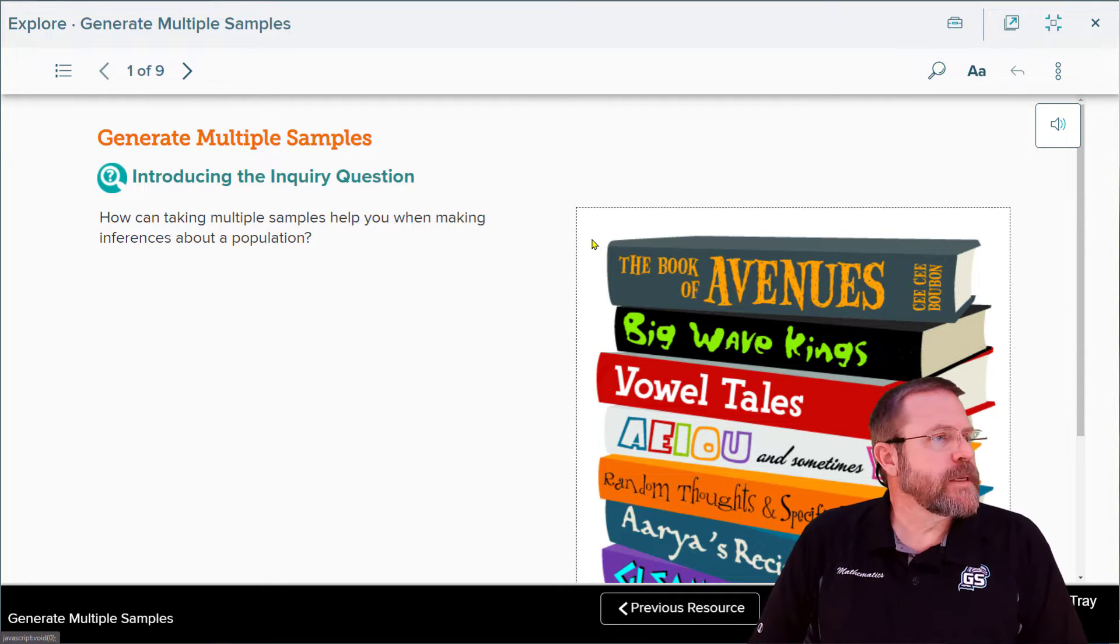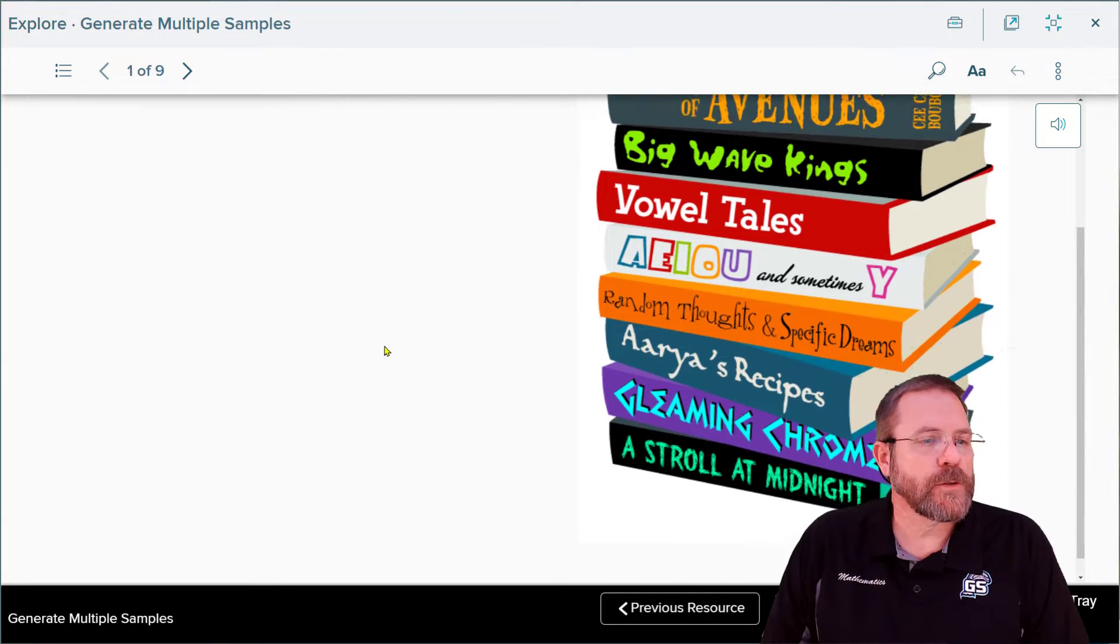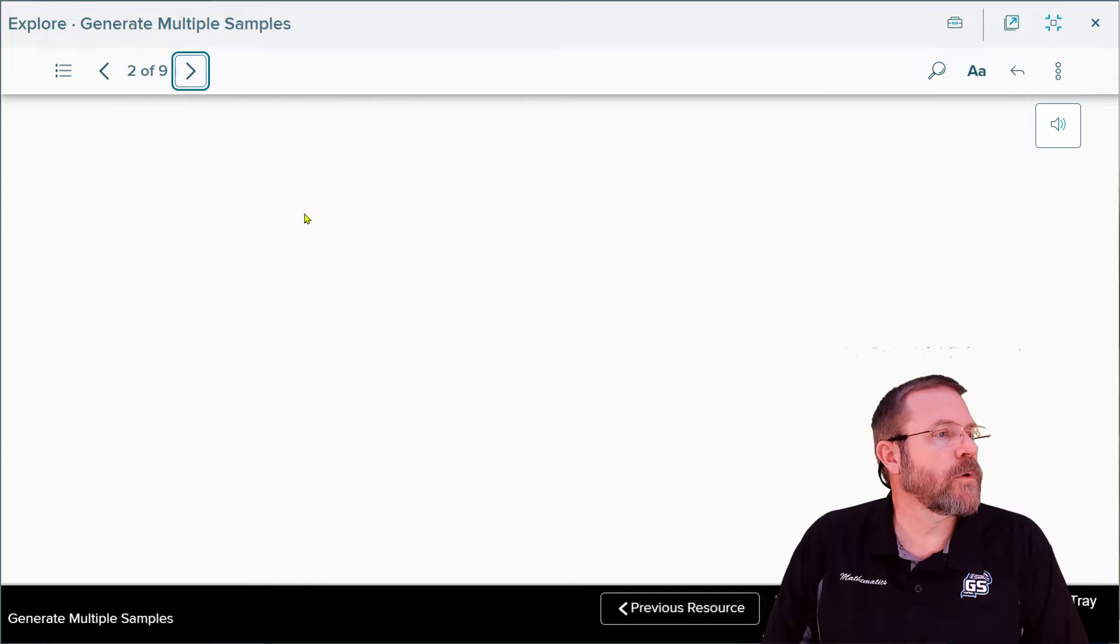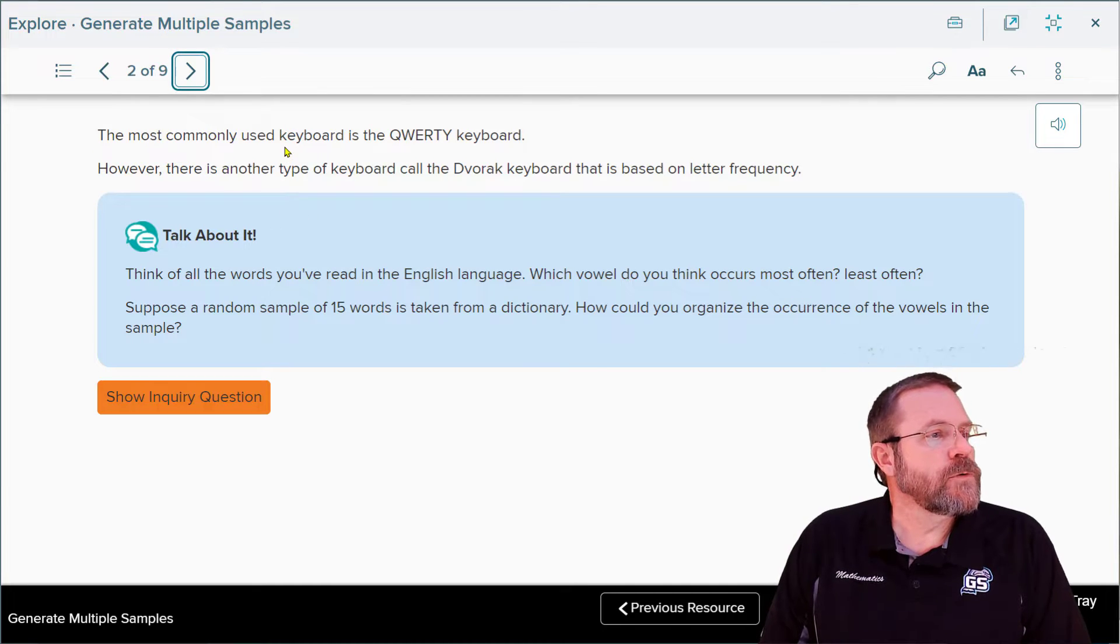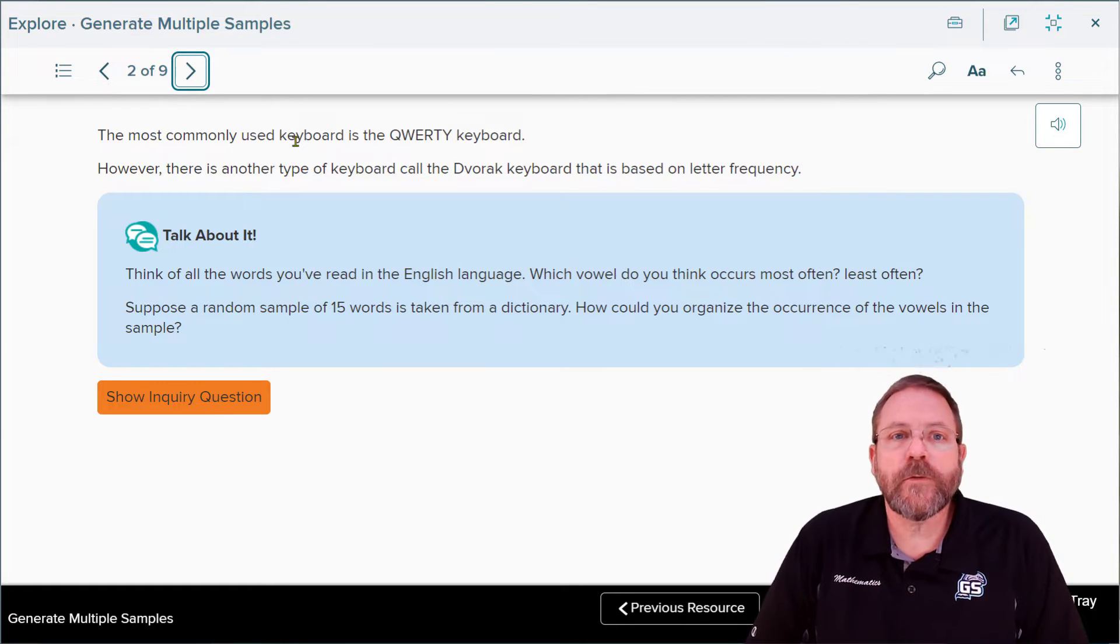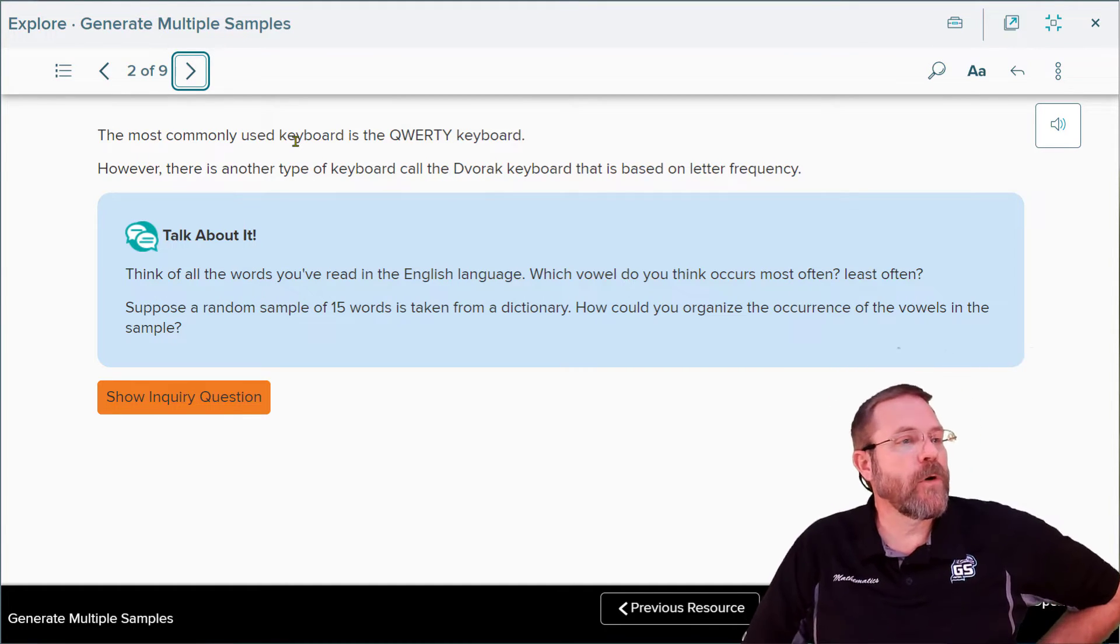Our inquiry question says how can taking multiple samples help you to make inferences about a population? The most commonly used keyboard in the world is the QWERTY keyboard. That's the keyboard on your Apple devices or Chromebooks. They call it QWERTY because if you look at the top of your keyboard, Q-W-E-R-T-Y. That's the reason it's called a QWERTY keyboard.